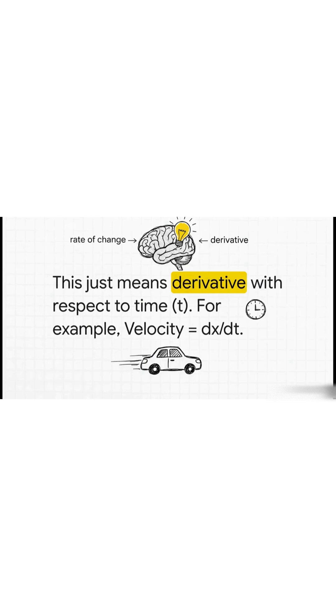Listen up. This one's a biggie. Anytime you see the phrase rate of change in a problem, I want your brain to just scream derivative. Most of the time, they mean with respect to time, t. The classic example, velocity is just the rate of change of position, or dx over dt.